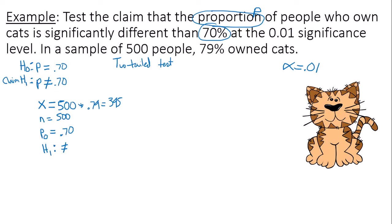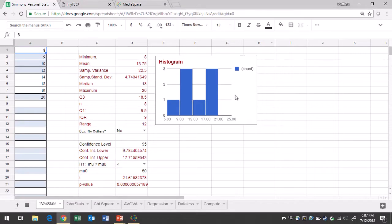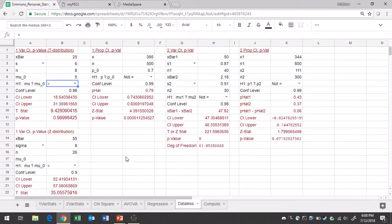In Google Sheets, we're going to go to the data list tab. I'm dealing with one proportion here, so I'm going to go over to columns D and E. X is the number of successes, in this case 395. Sample size is 500. P-naught is 0.70, and not equal to is my sign.